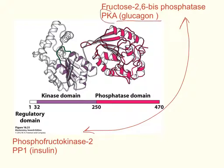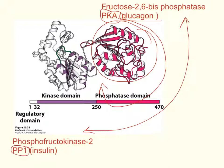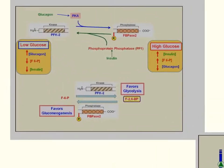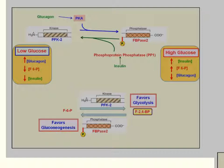Under glucagon signaling, protein kinase A will phosphorylate this enzyme, making the phosphatase domain active. Under insulin signaling, protein phosphatase 1 will dephosphorylate it, making the kinase domain active. So the state of phosphorylation — driven by glucagon or insulin — determines which enzymatic function dominates.